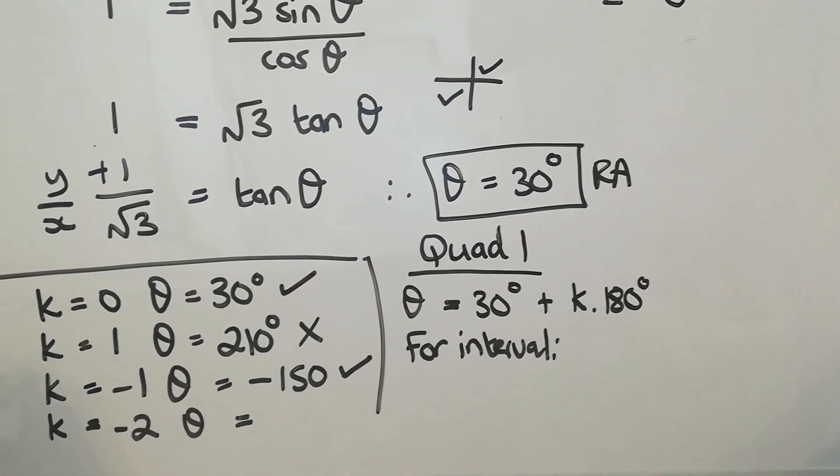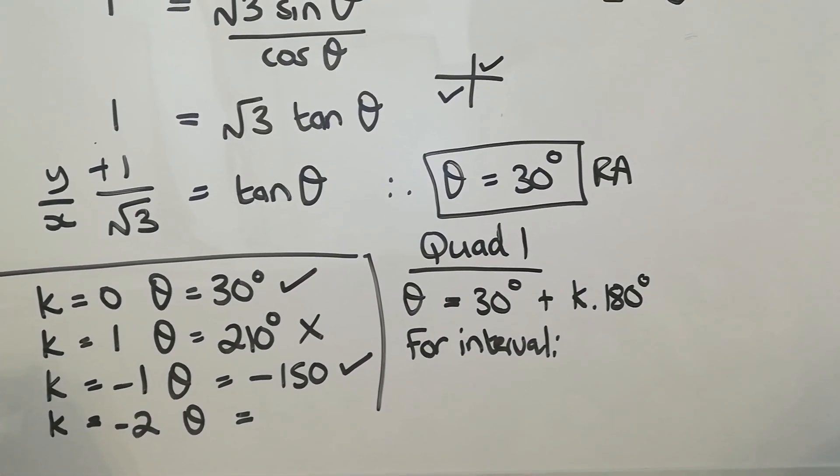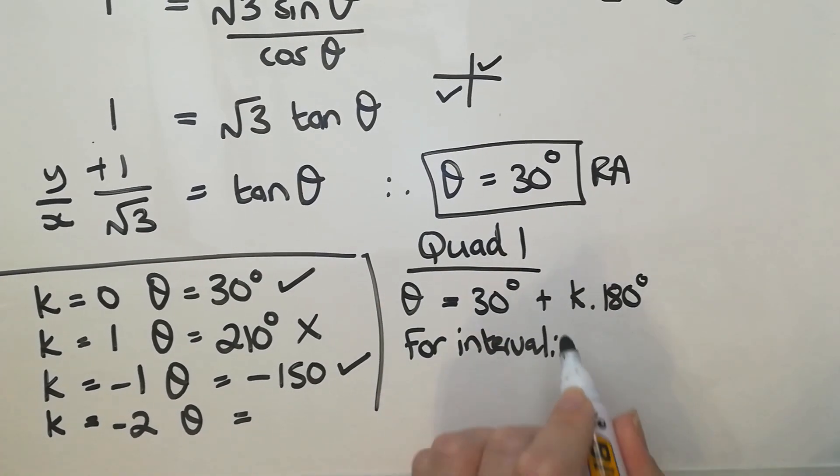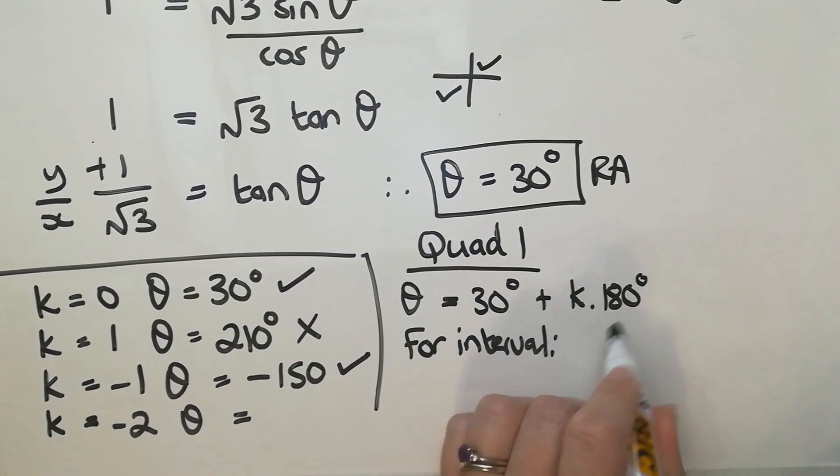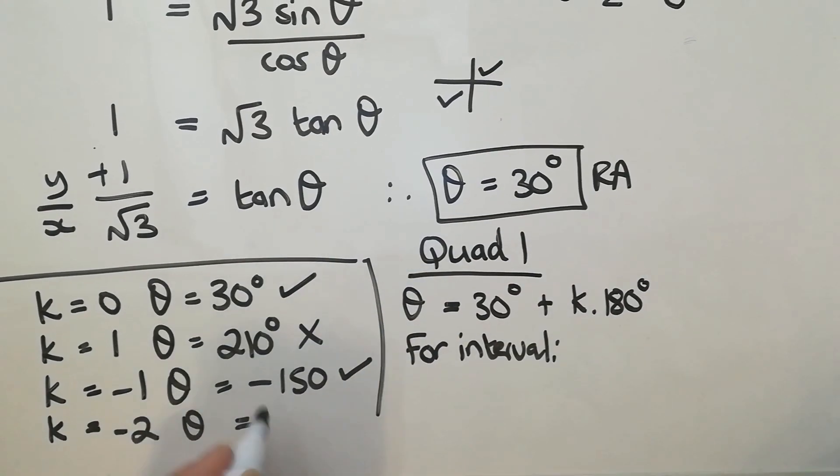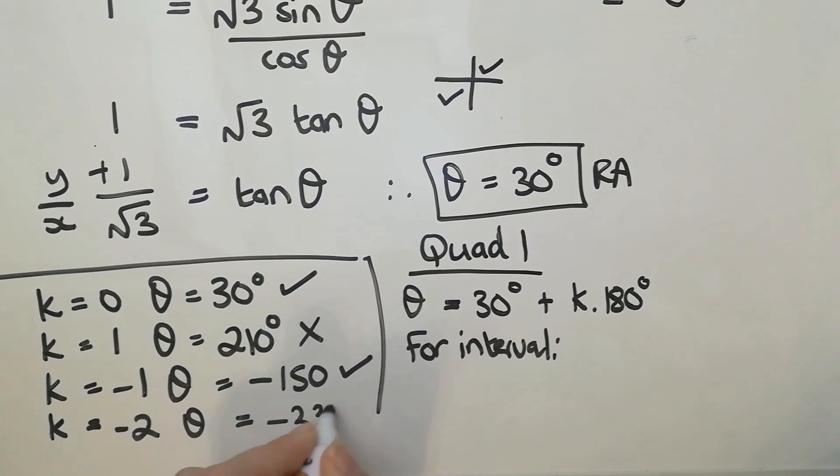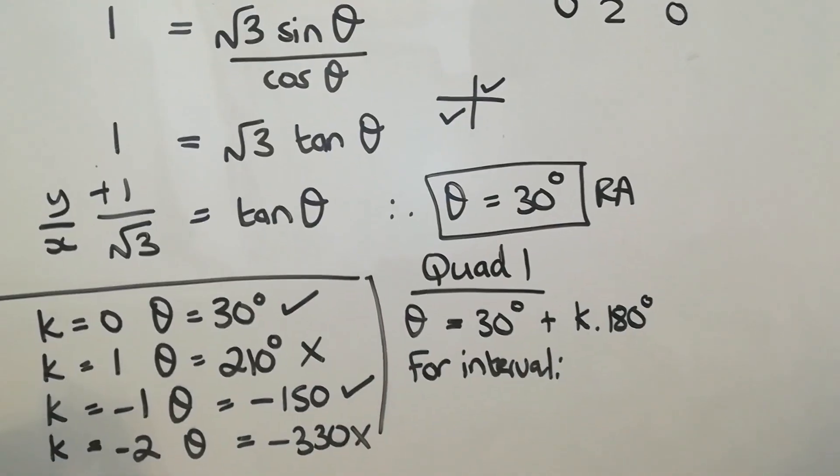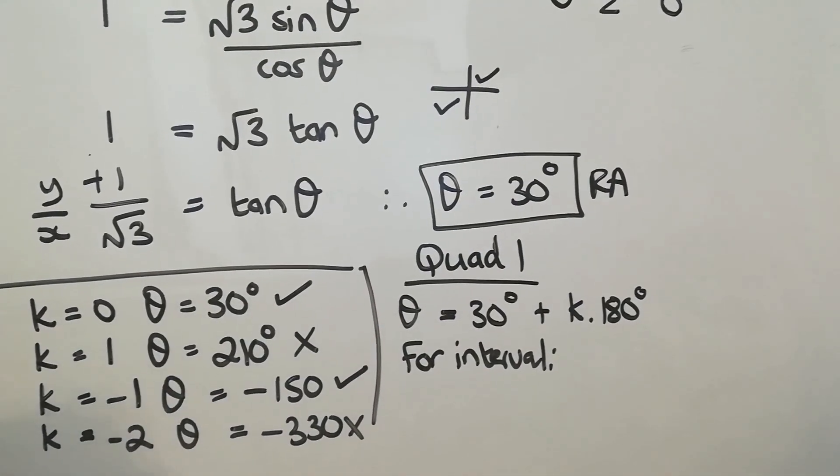Then if k equals negative 2, I'm taking theta and I am my 30. And I'm going to minus 360 essentially. So I'm going to get negative 330. Does that fit into that? No. So then I'm obviously not going to go any further. So that's all I've got.